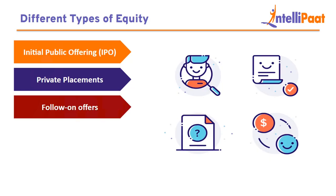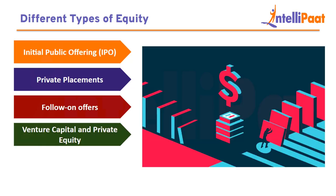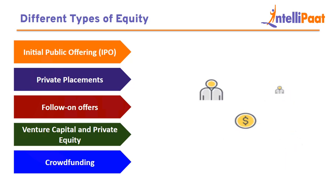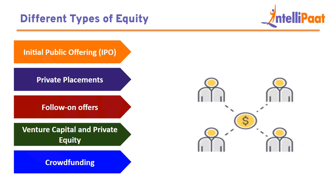Follow-on offers: businesses already listed on a stock exchange can generate more money by selling additional shares. Venture capital and private equity: high-growth businesses and startups frequently obtain funds from venture capital and private equity investors. In exchange for a share of company stock, these investors contribute capital. VC and PE investments assist companies through their development objectives while also fostering growth and providing resources and expertise. Crowdfunding: through equity crowdfunding platforms, businesses may raise money from several small investors. In return for money from investors, the business provides shares or equity units. This gives companies, especially startups, a way to get funded by a large pool of investors.